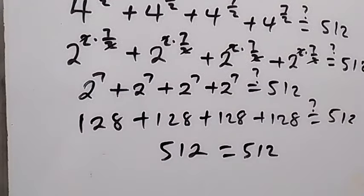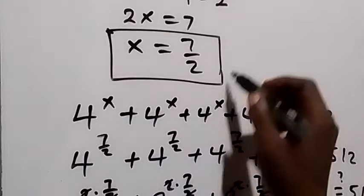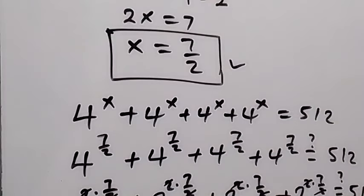The left-hand side equals the right-hand side, and therefore the value of x, which is 7 over 2, is correct for this problem. Thank you for watching — don't forget to give a thumbs up and subscribe to my channel. See you in the next class, bye for now.